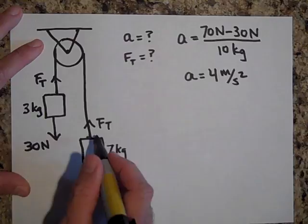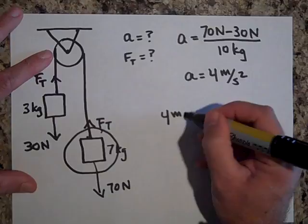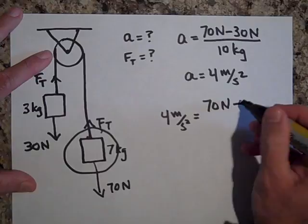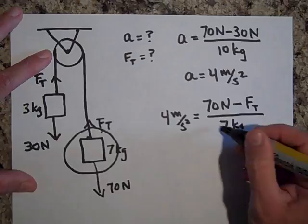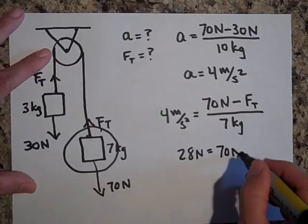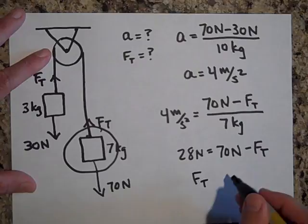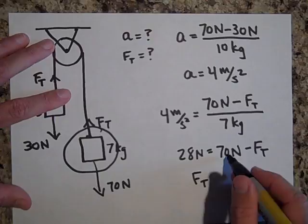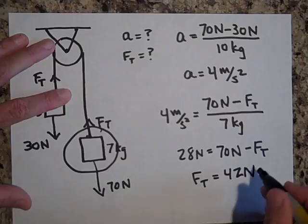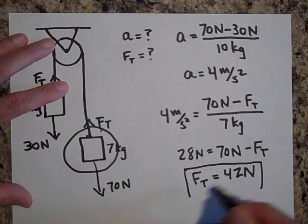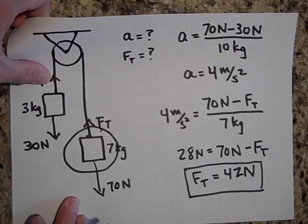To get the tension, I'll look at the 7 kg mass. It's accelerating at 4 m/s²: a = (70 N − Ft) / 7 kg, so 28 = 70 − Ft, giving Ft = 42 newtons. The tension force had to be between 30 and 70 newtons, and 42 fits perfectly in that range.